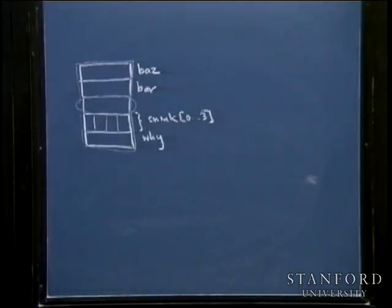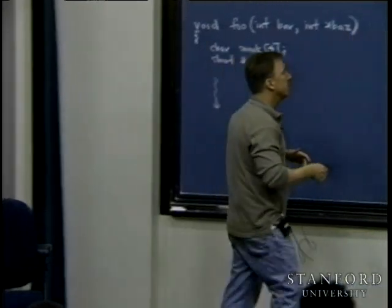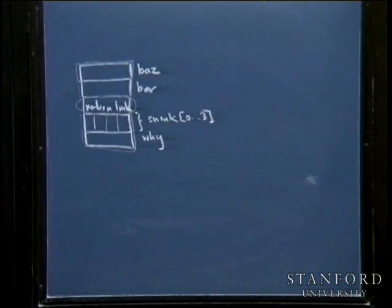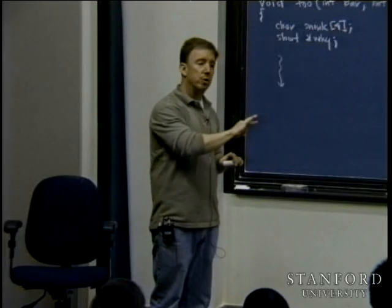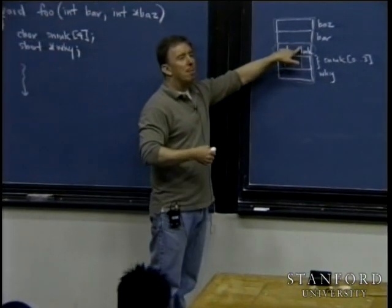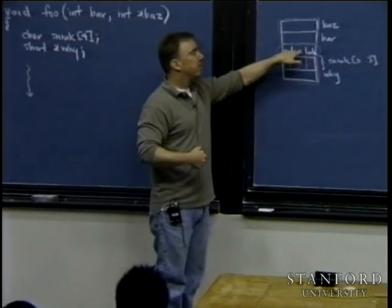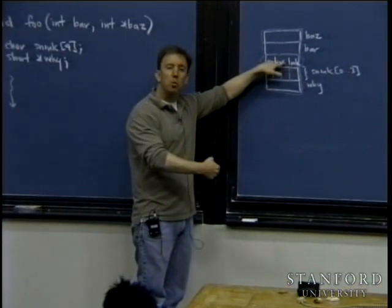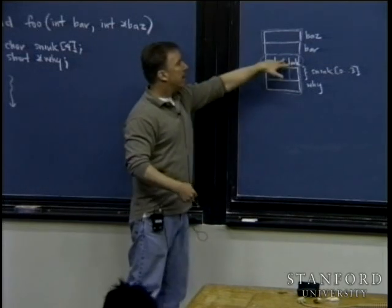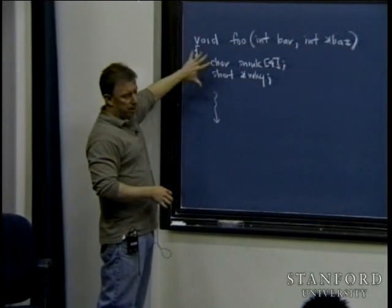The reserved space sits between parameters and local variables and has information about the function that called us. Foo is invoked from main or some other function — possibly foo itself if it's recursive. We need to lay down a little piece of information about where in the code base we found this call to foo. When the function exits, it relies on this value — the saved PC — which is what the PC value would have been had the function call not interrupted the stream of instructions.